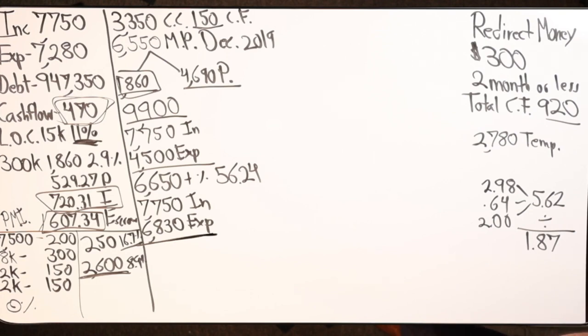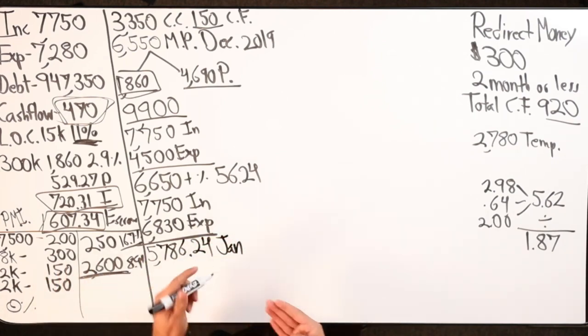If I go back to that $920 cash flow, let's see what we got. $6,650 plus the $56.24, boom, $5,786. And that puts me in January.